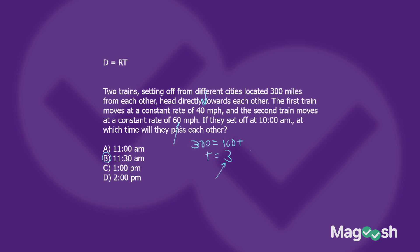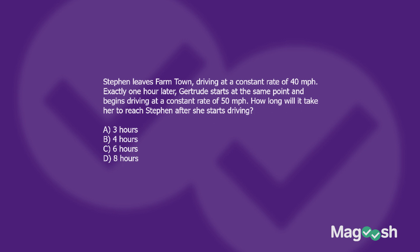Now we'll look at the last problem: a tricky one where we go back to Steven and Gertrude, but now they're in cars and one is chasing the other. Unlike the trains heading toward each other where you combine rates, here they're in catch-up mode. Steven leaves Farm Town driving at 40 miles per hour. After one hour, Gertrude starts driving at 50 miles per hour. After one hour, Steven is 40 miles ahead, and Gertrude is going 10 miles per hour faster than Steven.